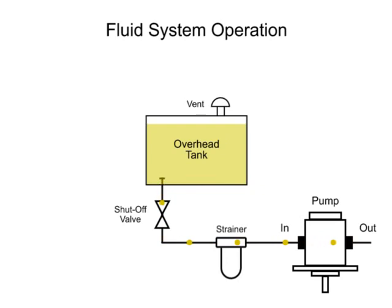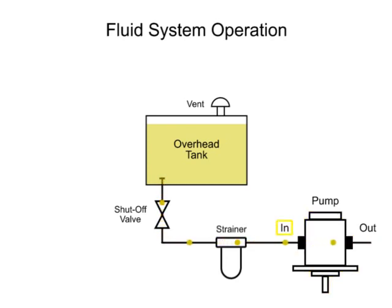The placement of fluid system components in relation to each other is critical to successful operation of the system. Fluid naturally flows from areas of high pressure to areas of low pressure. Pumps operate by creating low pressure at the inlet, which allows liquid to be pushed into the pump by atmospheric or pressure head.